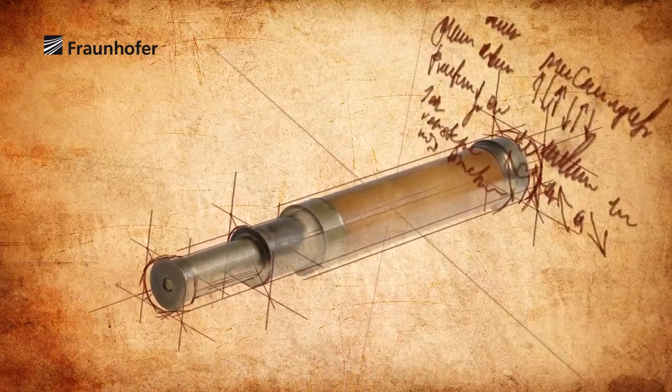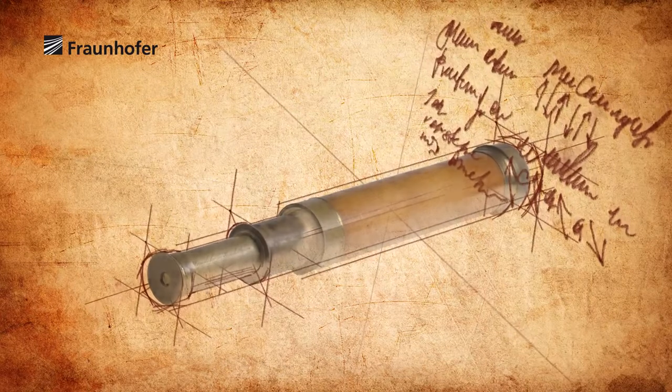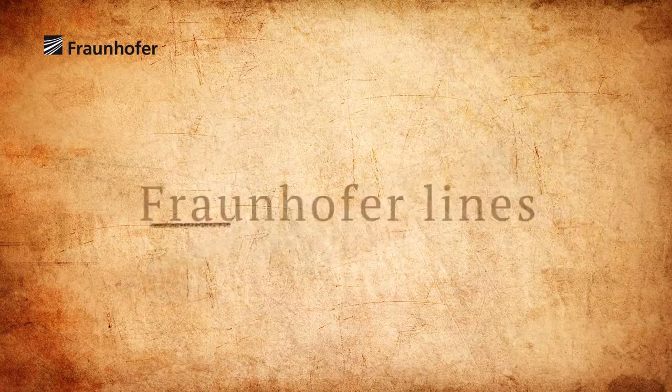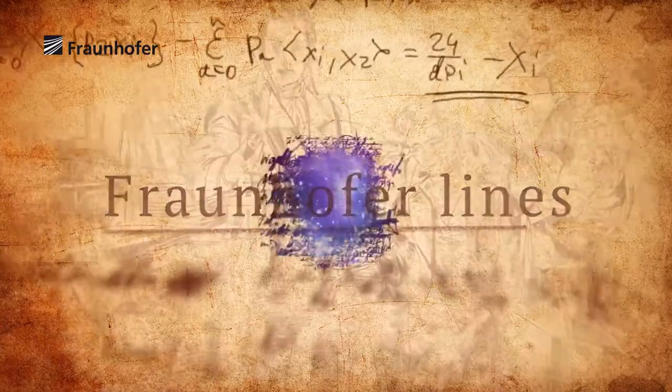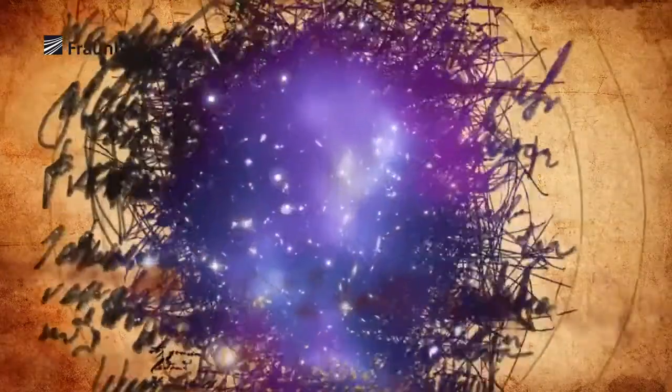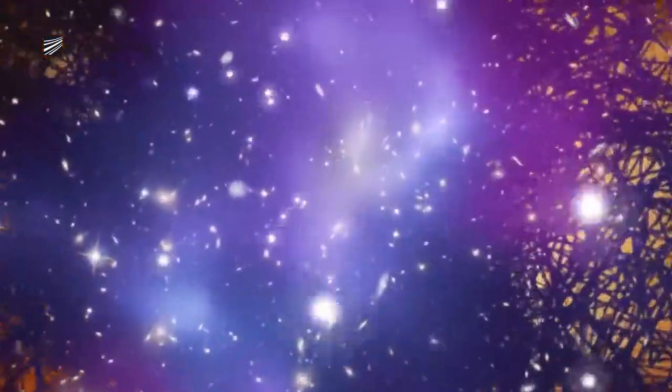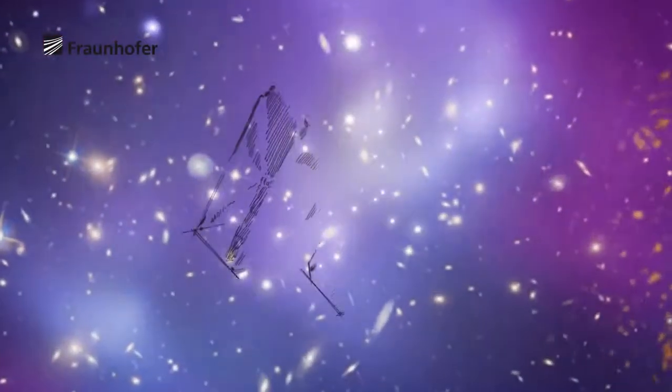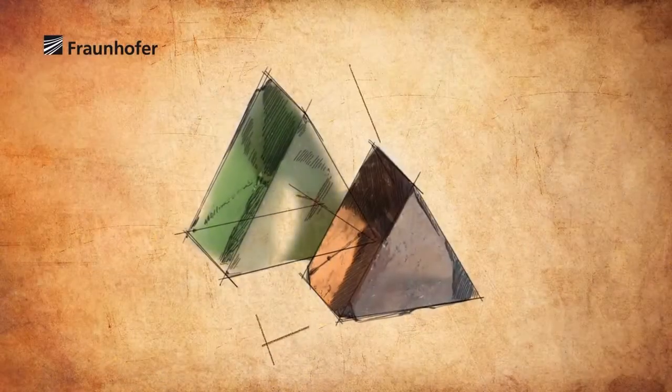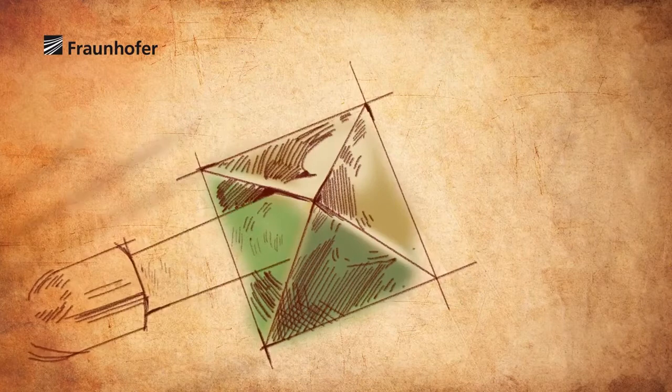His most important discovery has survived even to this day, named after him the Fraunhofer Lines. They allow us to take a look into space and to understand how stars are formed. With the aim of making better optical lenses, Fraunhofer examined the color dispersion of glass.